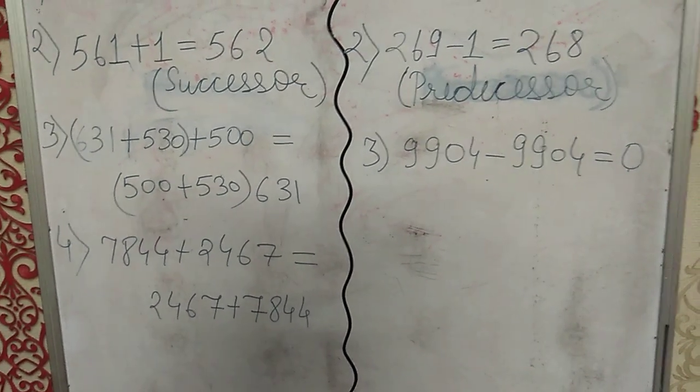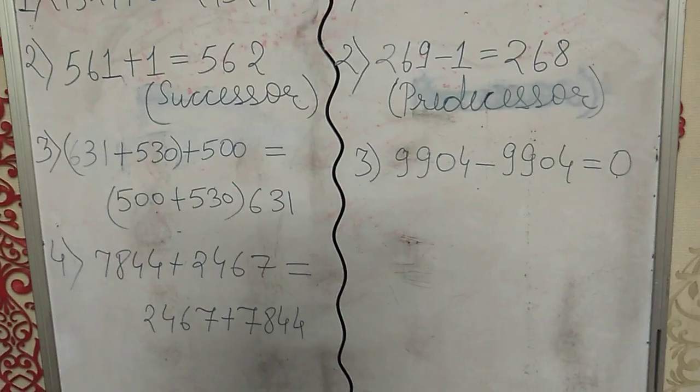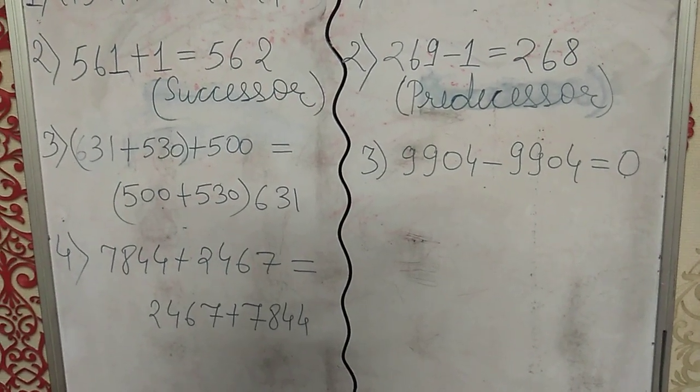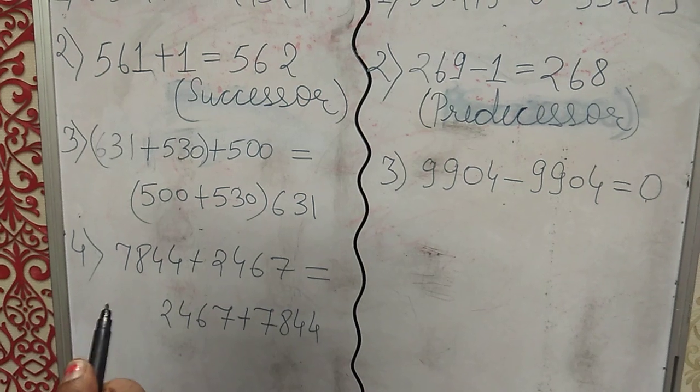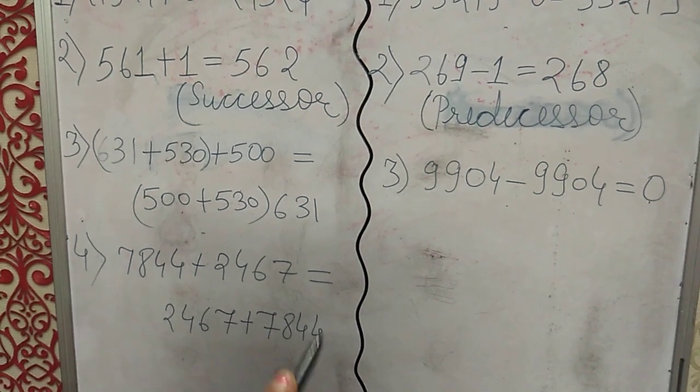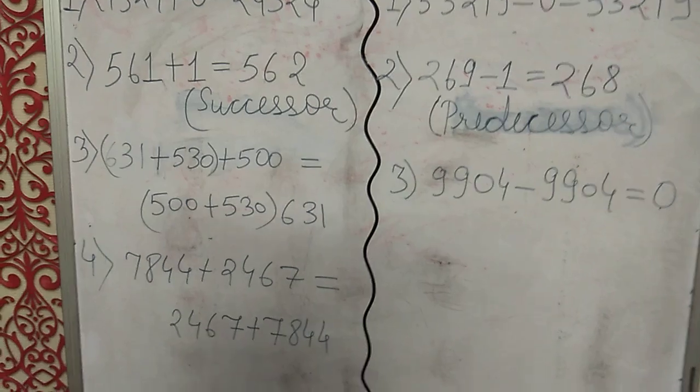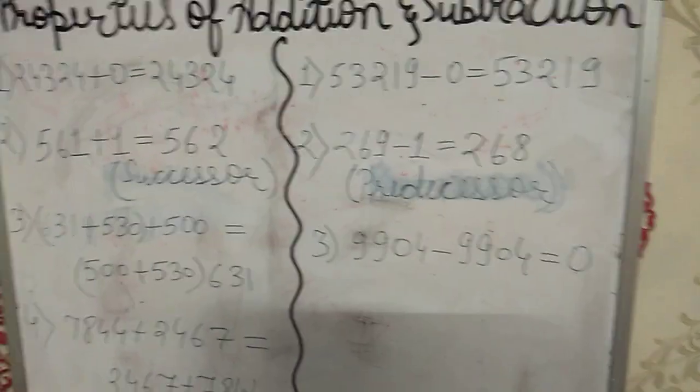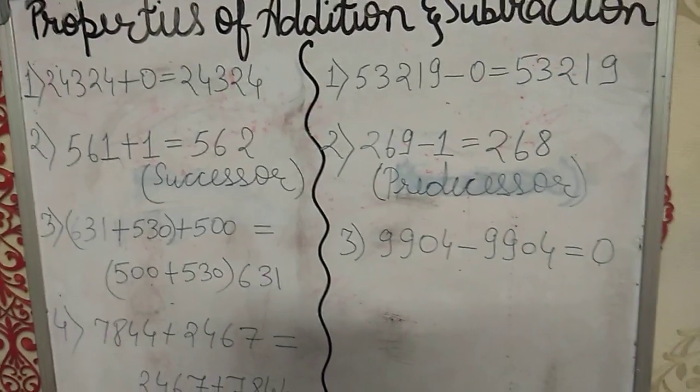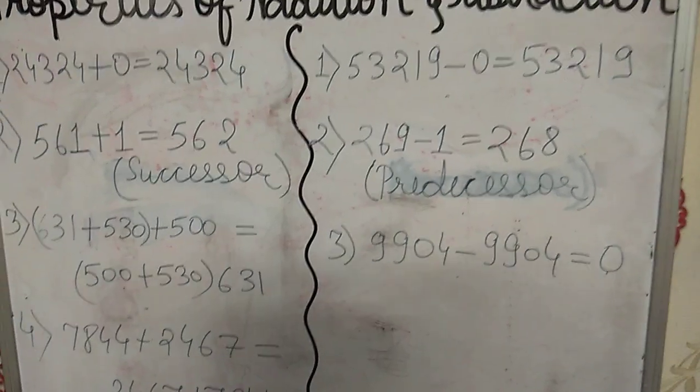Fourth property is the order of the numbers. If two numbers have to be added, then we can add them in any order. Like this number has been written after, but the sum will remain the same. Now the properties for subtraction.